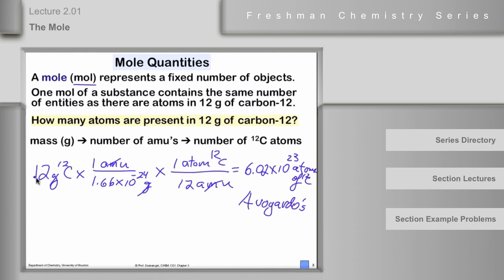The numbers here: 12 times 1 times 1, divided by 1.66 × 10⁻²⁴, divided by 12. That's where the exponent 23 comes from. Put it in your calculator and be sure that you get it.